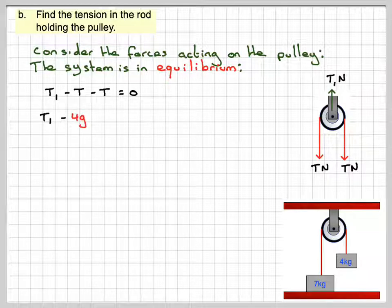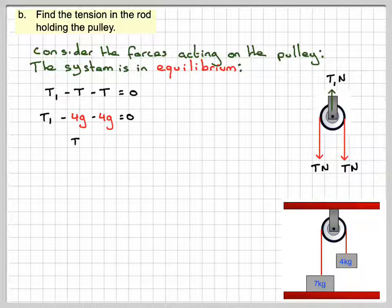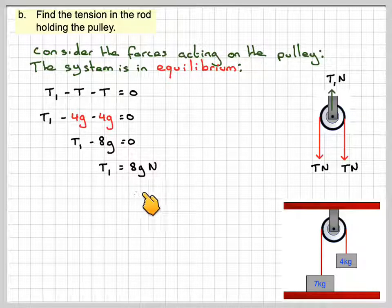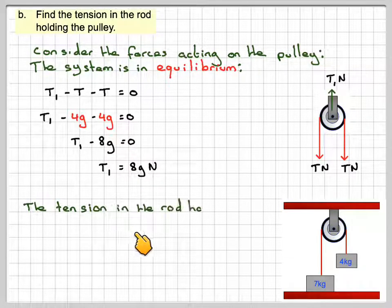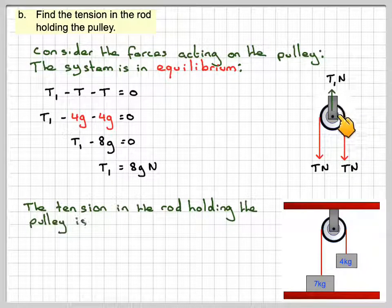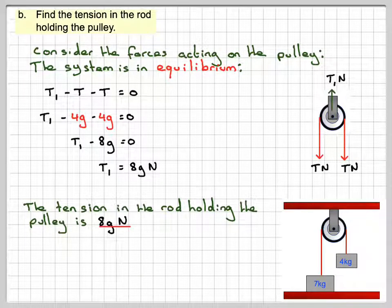And T1, we know that T is already 4g, so T1 minus 4g minus 4g is equal to 0. T1 minus 8g is equal to 0 gives that T1 is equal to 8g newtons. So the tension in the rod, this one here, holding the pulley is 8g newtons.